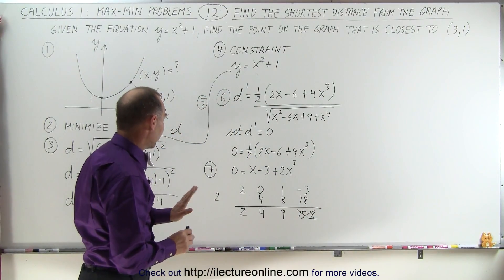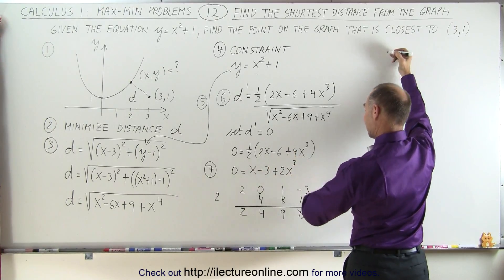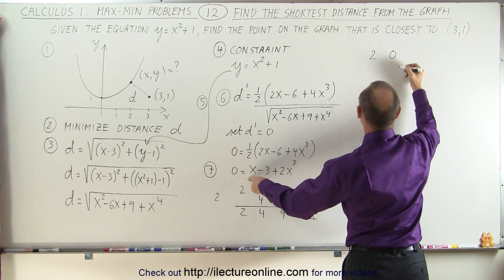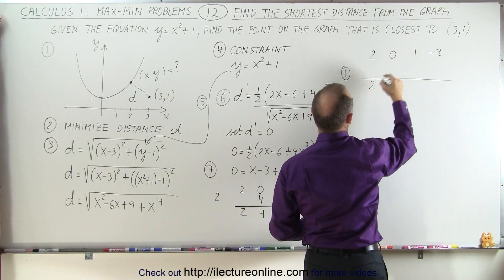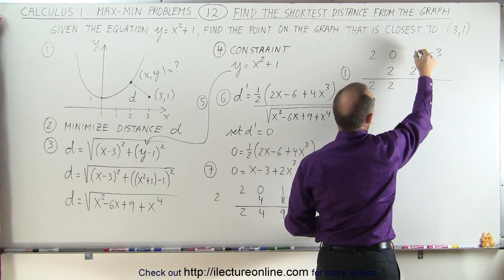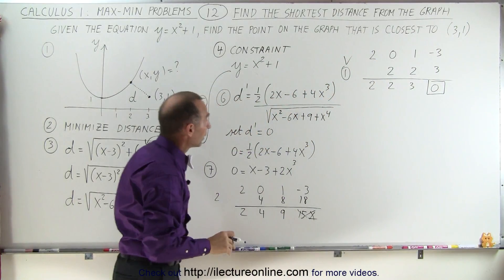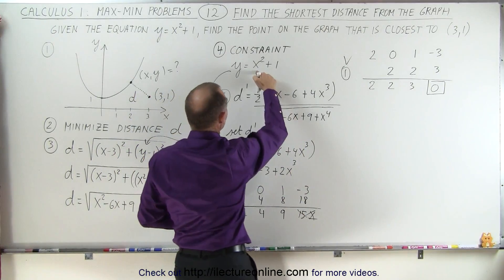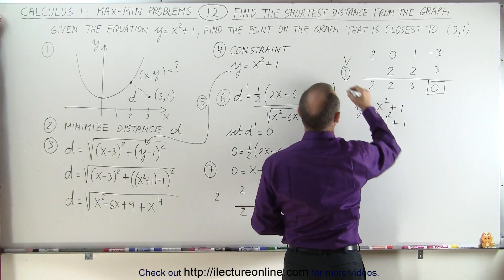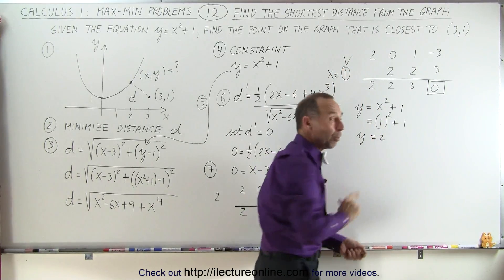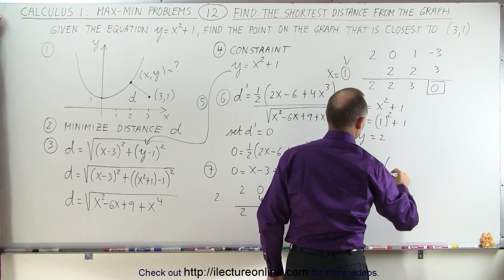Let's try x equals 1. Using synthetic division with coefficients 2, 0, 1, and negative 3: drop down the 2, 1 times 2 is 2, add to get 2, 1 times 2 is 2, add to get 3, 1 times 3 is 3, add to get 0. So x equals 1 is one of the roots. Plugging back in, y equals x squared plus 1, which is 1 squared plus 1, equals 2. So x equals 1, y equals 2 is the point on the graph closest to (3, 1).